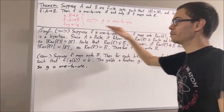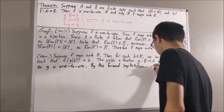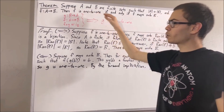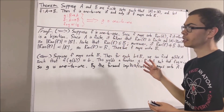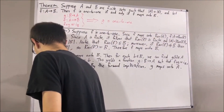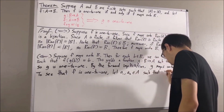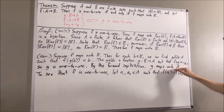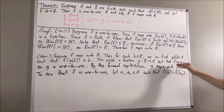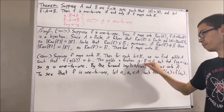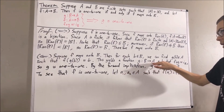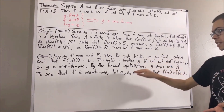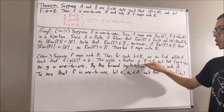This is the same argument we did in the forward implication. Now we're ready to show that F is one-to-one. To prove that F is one-to-one, let's give ourselves two elements A1 and A2 in A such that F of A1 equals F of A2. The whole goal is to prove A1 equals A2. Since G maps onto A, for every element a in A there exists an element b in B such that G of b equals a. So there exists B1 in B with G of B1 equals A1, and B2 in B with G of B2 equals A2.